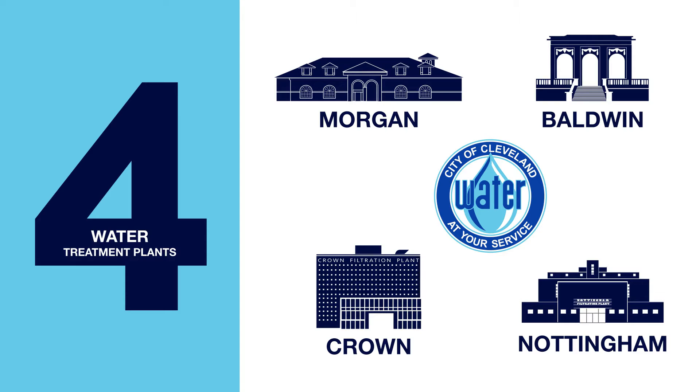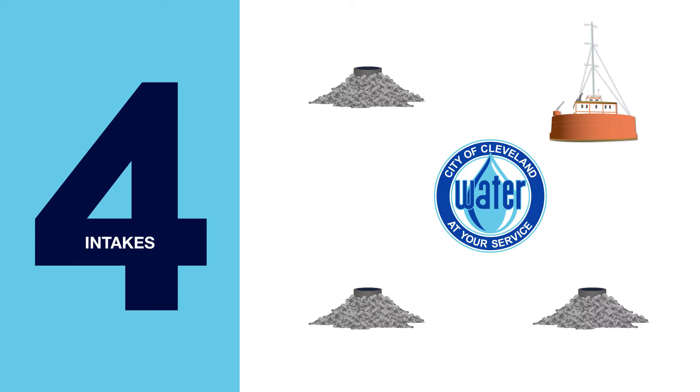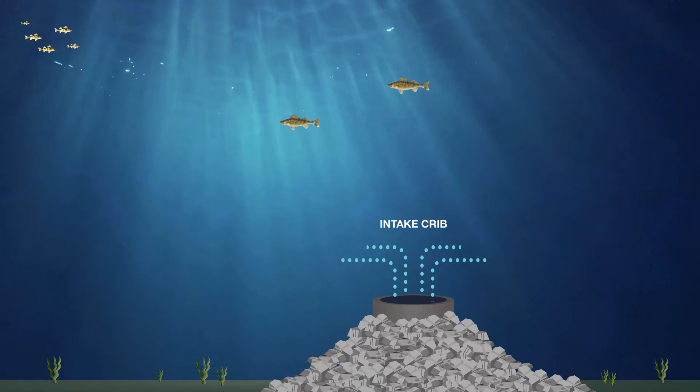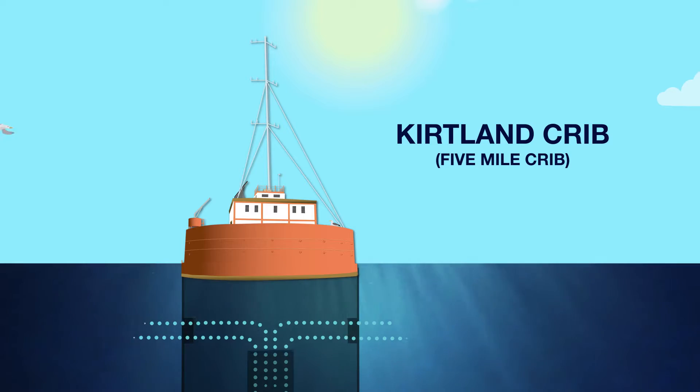These four treatment plants each have their own intake that pulls water in from Lake Erie. Each intake is covered by a protective crib. Only the Kirtland Crib, also known as the Five Mile Crib, is visible above water.